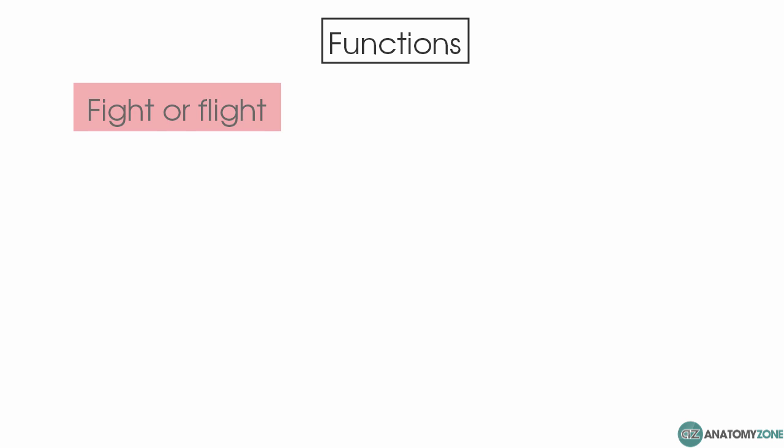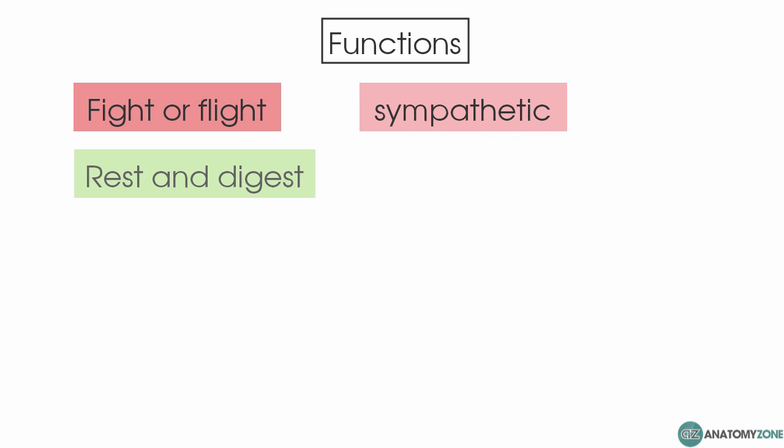In terms of the functions of the parasympathetic and sympathetic nervous system, it's useful to think of fight or flight for the sympathetic and rest and digest for the parasympathetic. These mnemonics are quite broad but they give you an idea of the function of the two divisions — imagine the fight or flight response engaged in a caveman running away from a lion.